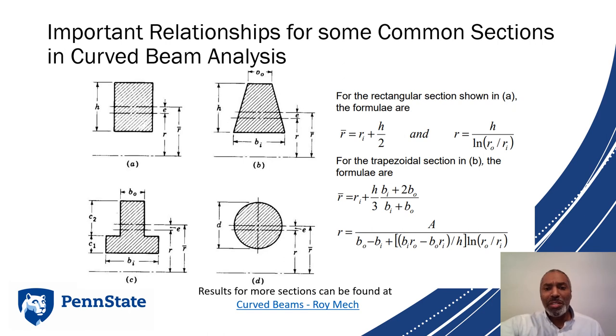Finally, there's some important relationships for common sections in curved beam analysis. You can find here the equations for the centroid and for the neutral axis of different beams. You can find more information about curved beam analysis at a site by Roy Mech. They've got a lot of information for curved beams and more different cross-sections than what are shown here.